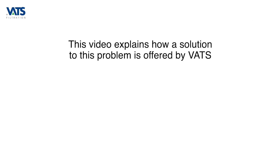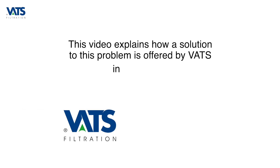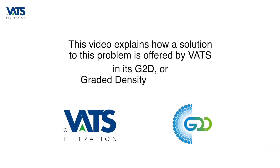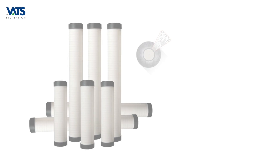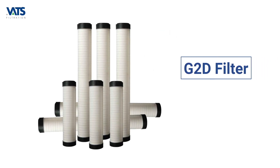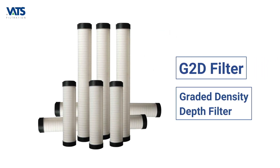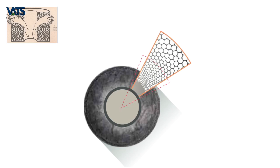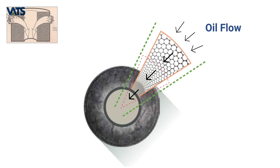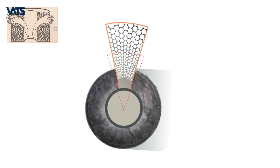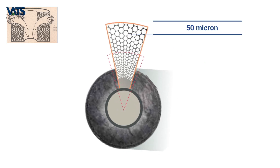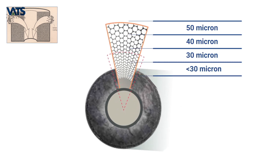The G2D is a graded density depth filter. In its G2D design, Watts presents a filter with its micron size reducing gradually in the direction of flow. Thus the outermost surface can begin with 50 microns, reducing down to just 2 microns on the inner face.